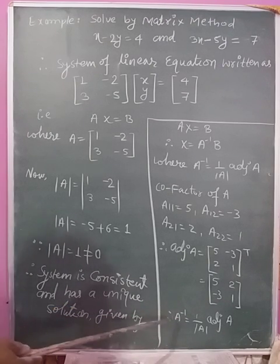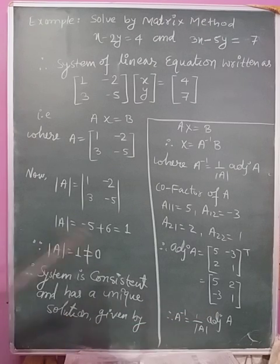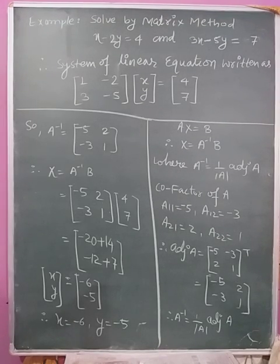And we use A inverse equal to 1 by determinant of A times adjoint of A. So A inverse equals -5, 2; -3, 1. Therefore we use X = A inverse times B. A inverse is -5, 2; -3, 1 and matrix B is 4, 7.